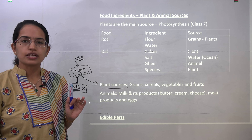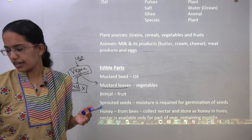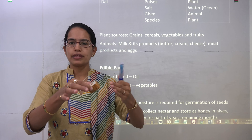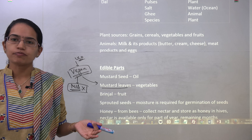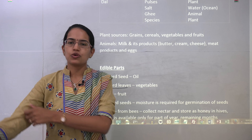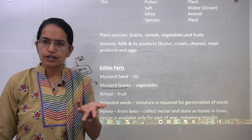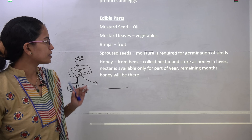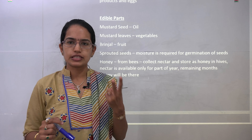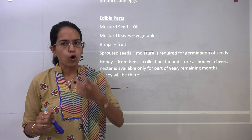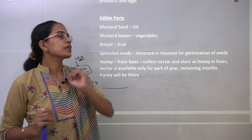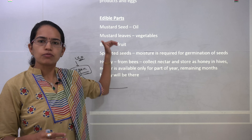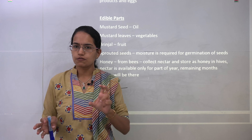Each food item is composed of different things. For example, a sweet dish like besan chakki is commonly made of flour along with milk solids — making it an animal product — and chickpeas, which is a plant product. So it is a combination of both plant and animal produce. The edible parts of different plants also vary. For mustard, you consume the seeds, from which we get mustard oil — called sarso ka tel in Hindi — and the leaves, from which vegetables are prepared. Brinjal is consumed as a fruit.